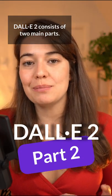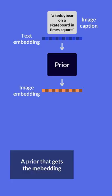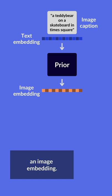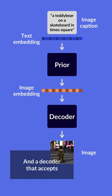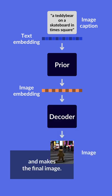DALL-E 2 consists of two main parts: a prior that gets the embedding of a caption and turns it into an image embedding, and a decoder that accepts this image embedding and makes the final image.